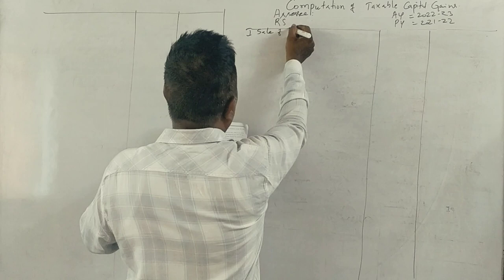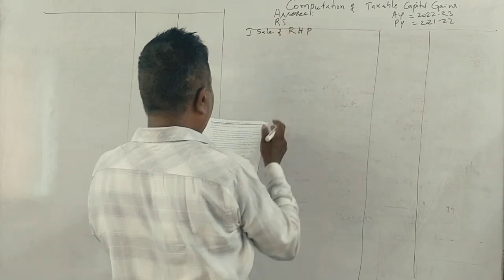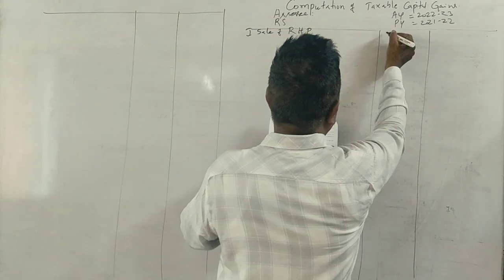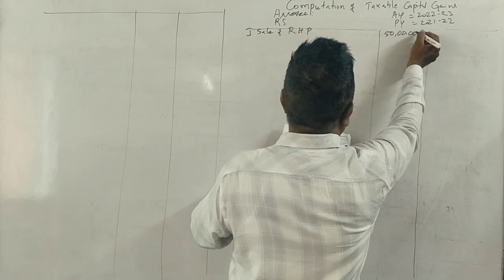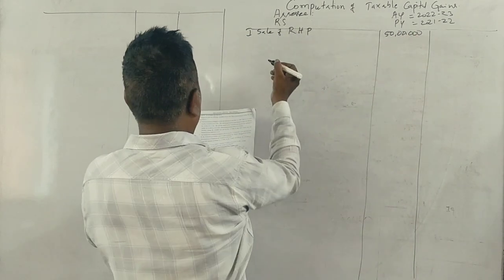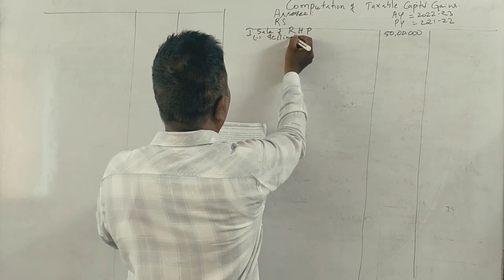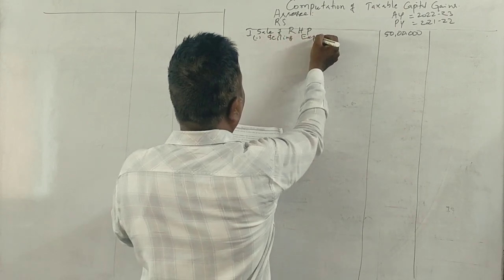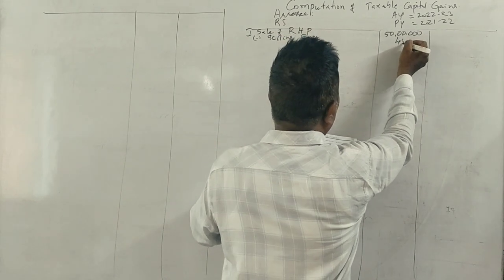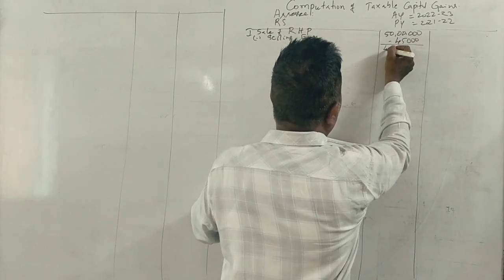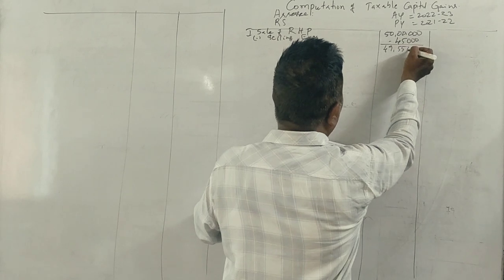First of all, sale of residential house property. Sale price is 50,00,000, so brokerage or selling expenses of 45,000 needs to be deducted, giving us 49,55,000.